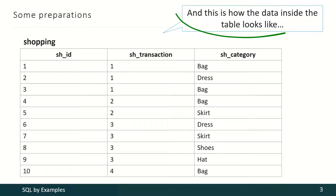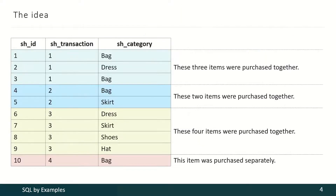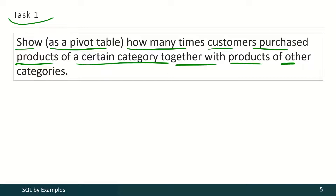When we fill this table with data we shall see the following picture. Here we see shopping IDs and those IDs are unique. Here we see transaction IDs and those IDs are not unique, and here we see product categories. The main idea is that some items were purchased together and some items were purchased on their own. Now we may proceed with tasks, and in the first one we have to show as a pivot table how many times customers purchased products of a certain category together with products of other categories.